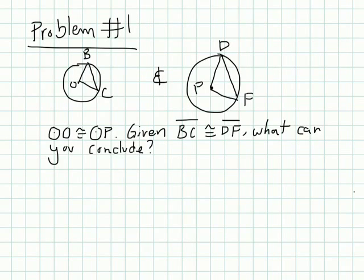So problem number one here. You have circle O right here is congruent to circle P here. Given that BC is congruent to DF, what can we conclude? Well, we can conclude a few things based off what we learned. So if BC is the same, then it also means that their central angles are the same.